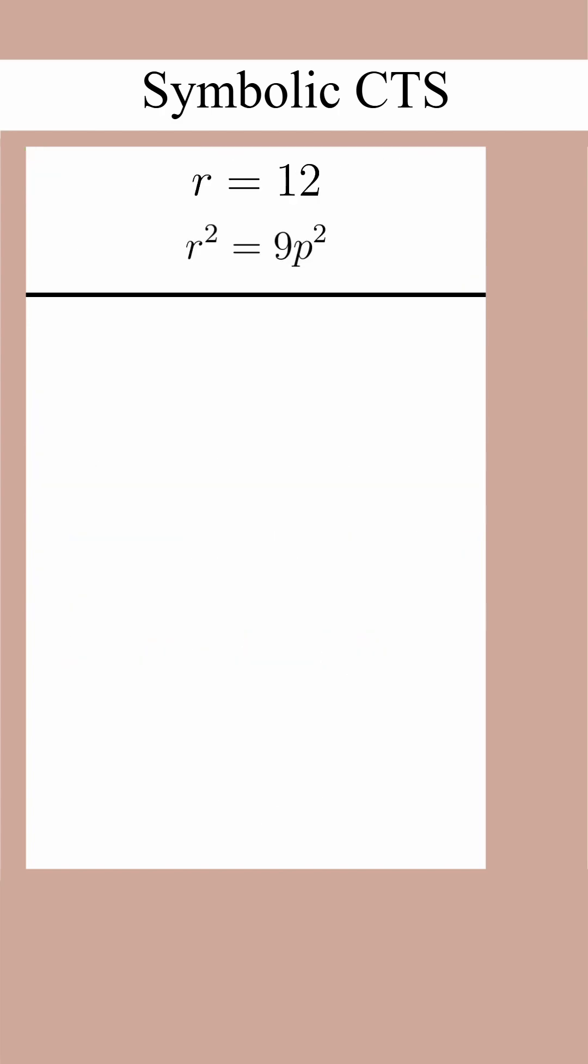Now we can recall that the question told us that r was equal to 12, and we can substitute. We get 144 is equal to 9p². We divide both sides by 9 and we get 16 is equal to p². Then we take the square root of both sides and we get p is equal to plus or minus 4. Because the question told us p was a positive constant, we will go with p is equal to positive 4.